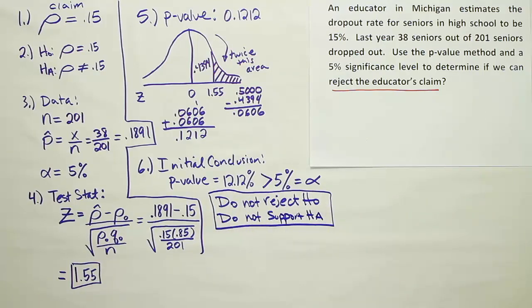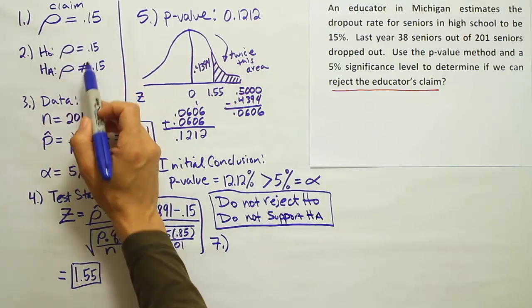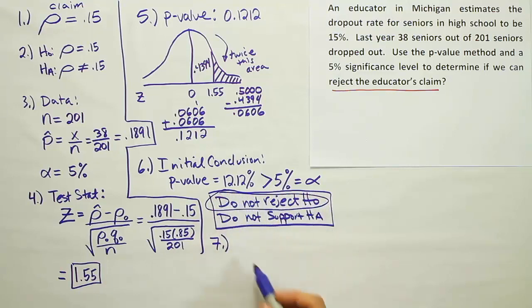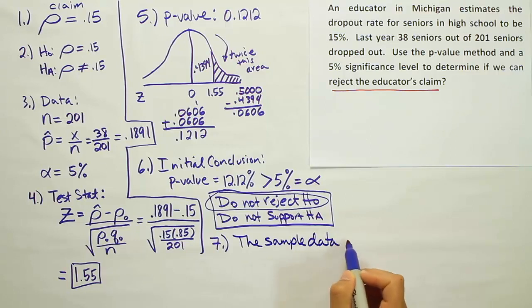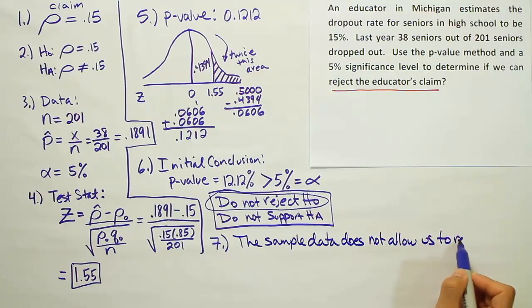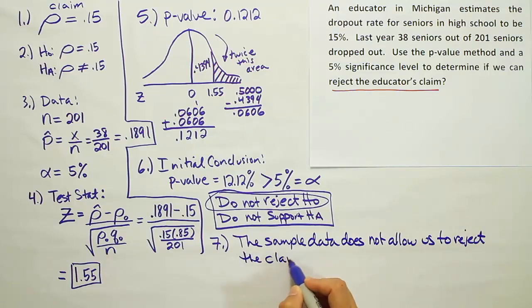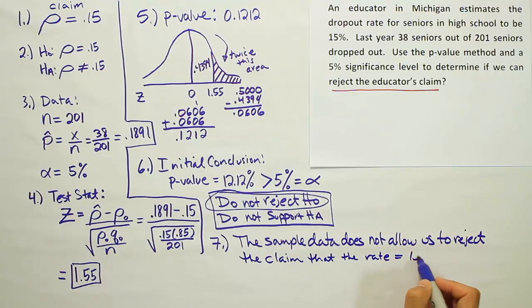Okay, now based on this initial conclusion, we have to word our final conclusion as our last step. And again, we're going to look back at the claim and say, what was the claim? Was it H0 or HA? It was H0 here. So we're going to use this wording in the end. Do not reject H0, or therefore do not reject the claim. So we're going to say the sample data does not allow us to reject the claim that the rate is equal to 15%. Okay, so we're not allowed to reject the claim that the rate is 15% based on this data here. So essentially what are we saying? We're saying that this educator is, this data does not show that he's wrong. It doesn't show that he's wrong. So okay, that's it.